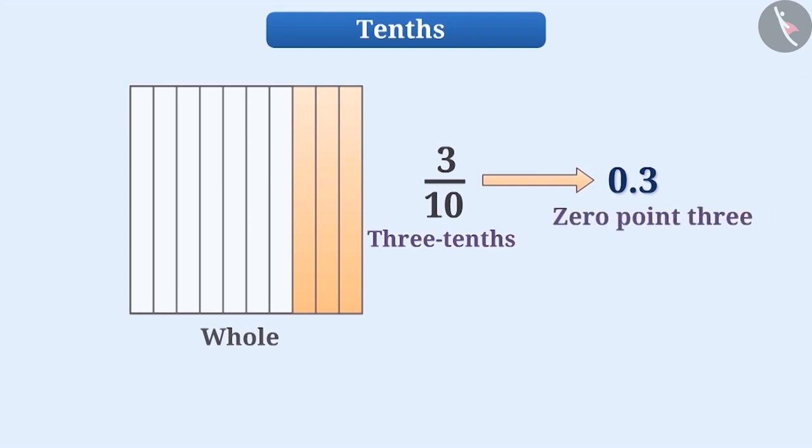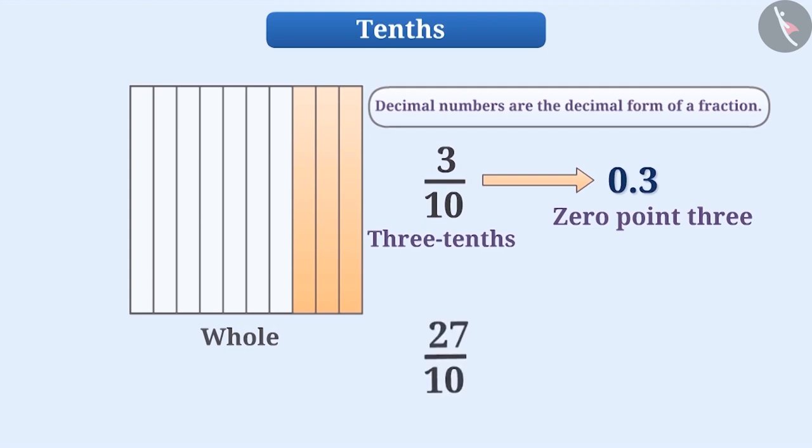Decimal numbers are obtained when fractions are represented in decimal form. Therefore, we can say that decimal numbers are the decimal form of a fraction. If the denominator of a fraction is ten, then to represent it in decimal form, we write the numerator first and then place the decimal point before its rightmost digit. If there is only one digit in the numerator, then we place a zero before the decimal point.